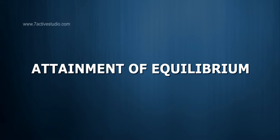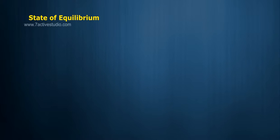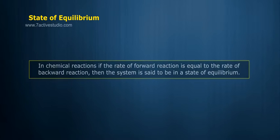Attainment of Equilibrium: State of Equilibrium. In chemical reactions, if the rate of forward reaction is equal to the rate of backward reaction, then the system is said to be in a state of equilibrium.